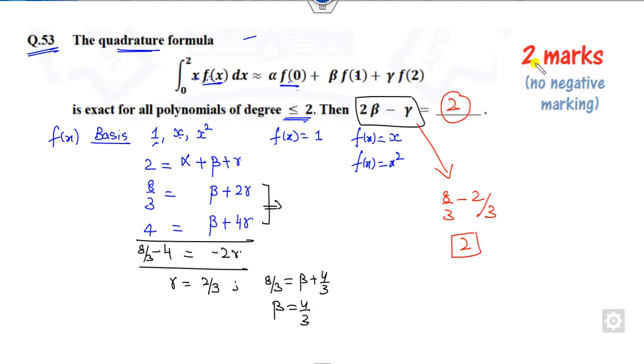You will get the two marks in a very simple way. Always remember that whenever there is a quadrature formula of polynomial 2, we will take 1, x, and x². If instead this is less than 3, then you can take polynomial x, x², and x³. Substitute one by one to get the solution and the right answer.